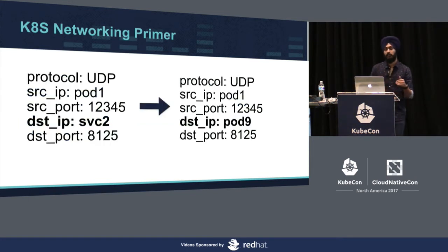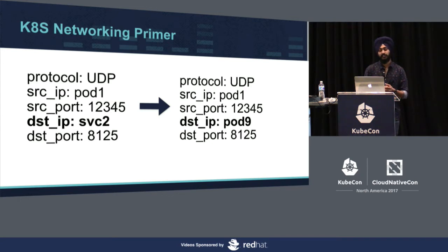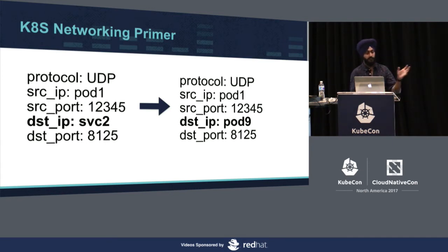This information is then stored in the conntrack table, which is a Linux construct — essentially a connection tracking table. Even though UDP is stateless, we can still use it to have some state. This is done so that when the reply comes back, we can reverse the translation, and so conntrack can remember what changes IP tables made. This is a five-tuple entry where all fields are stored.